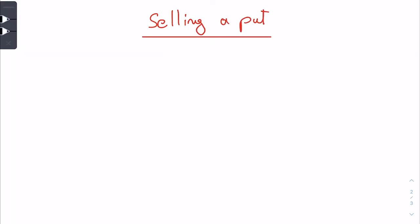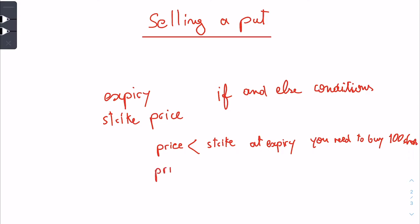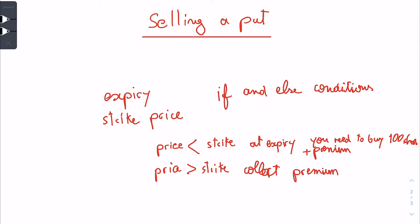When you're selling a put, you have an expiry and a strike price. If the price expires below the strike price, you need to buy 100 shares at the strike price you chose, plus you collect the premium. If the price is above your strike, you just collect the premium. From this, you can understand that you can make money even if you're wrong in the direction.